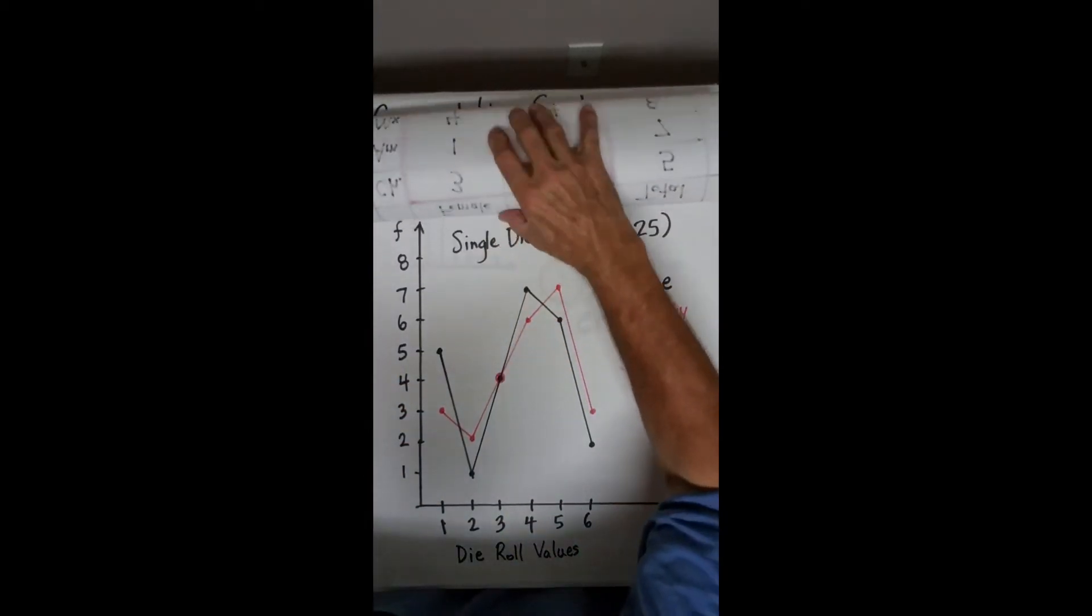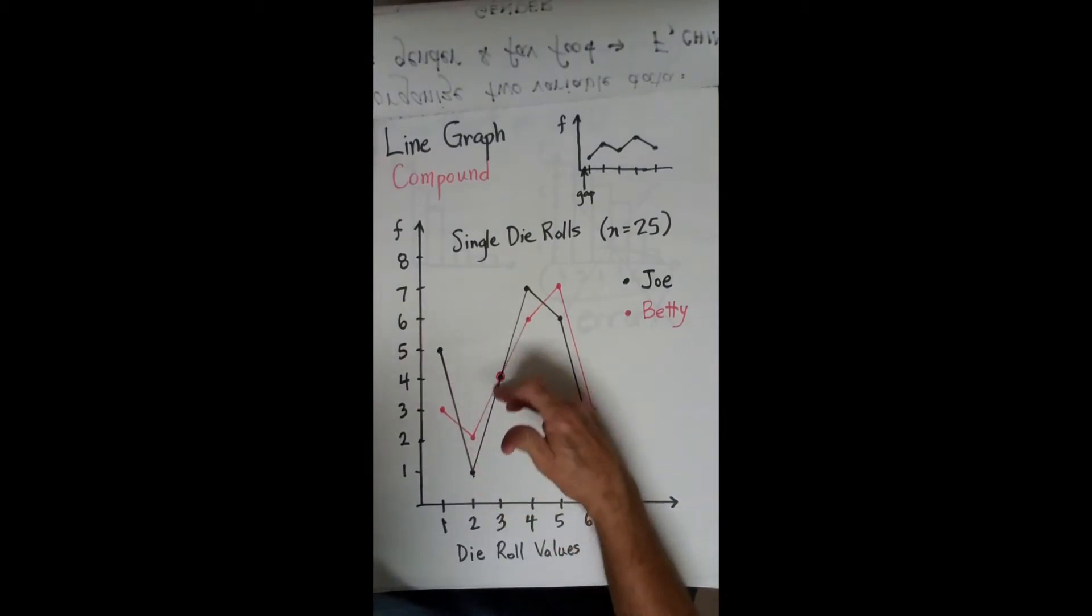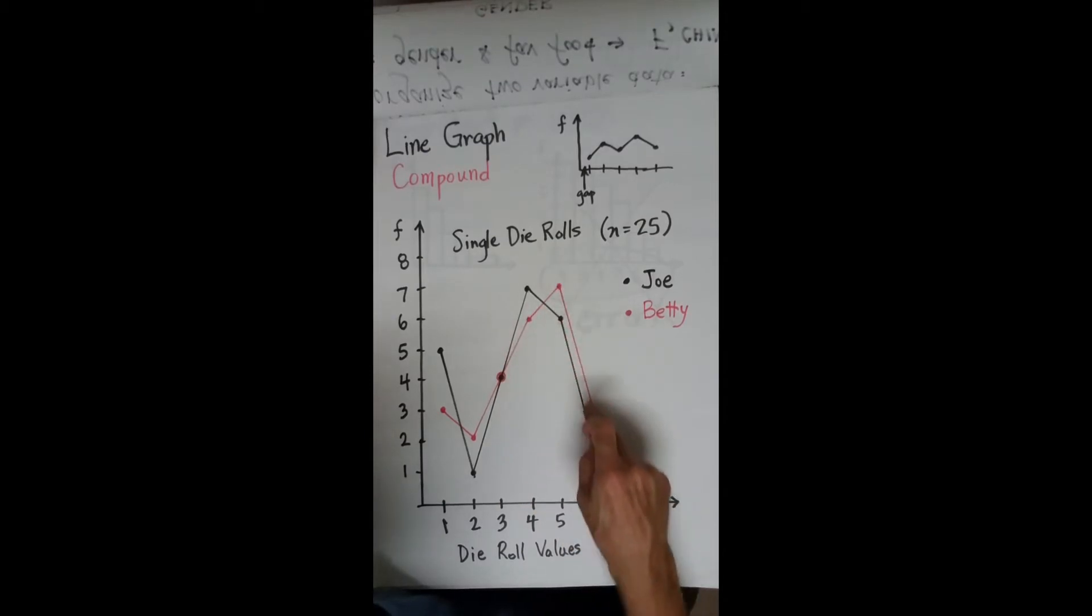You'll remember what this looked like. This was our compound line graph. It had one graph for Joe and a separate graph for Betty based upon their die rolls.